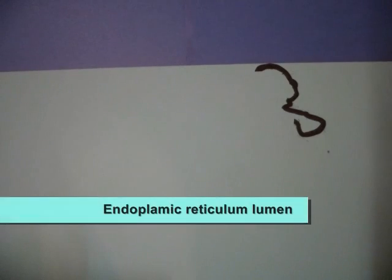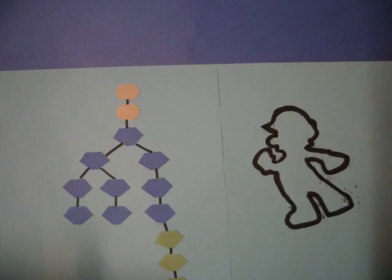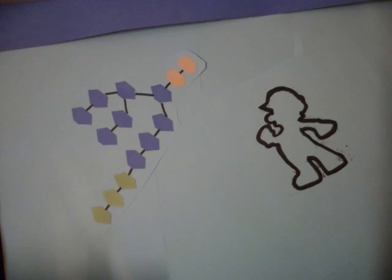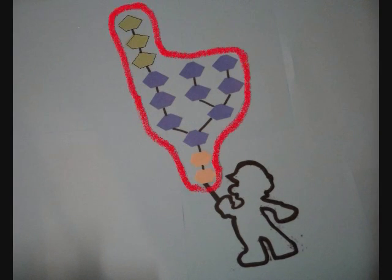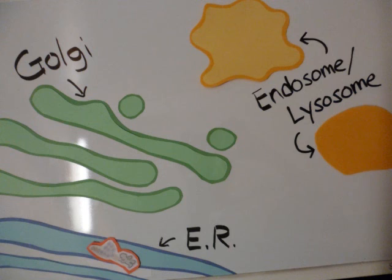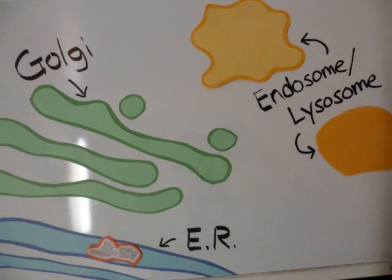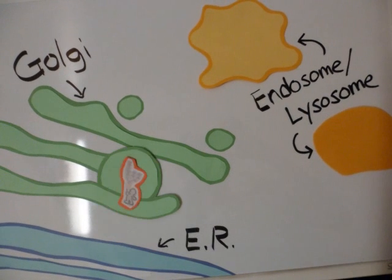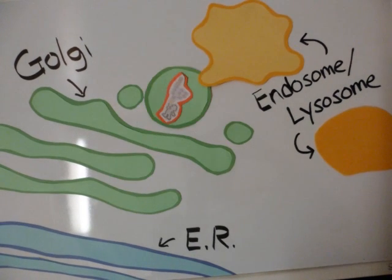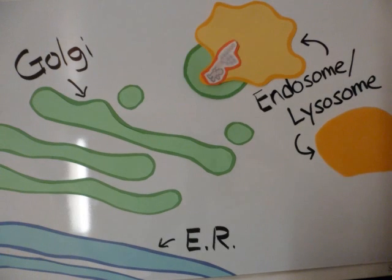Lysosomal enzymes, or lysosomal hydrolases, are manufactured in the rough endoplasmic reticulum. They undergo co-translational glycosylation of asparagine residues. This sugar group acts as a signal marker for recognition. The enzyme-sugar complex is then moved from the ER by vesicular transport through the Golgi to the target destination.